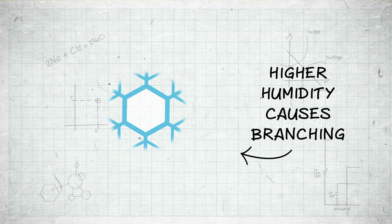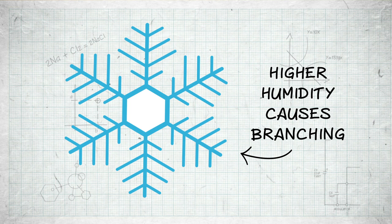But then if it gets blown into an area of low humidity, the growth will slow down, and facets will be created on the edges of the branches. Then if the snowflake moves back into an area of high humidity again, small branches will start sprouting on the edges of the original branches. So we'll get small sub-branches created. In this way, very complicated structures can be formed.